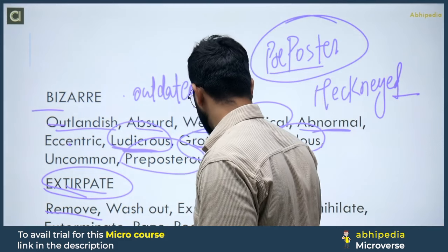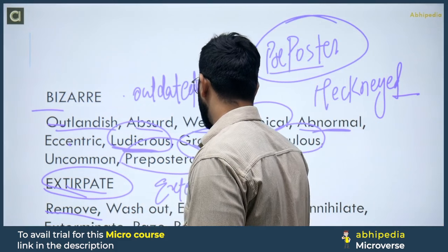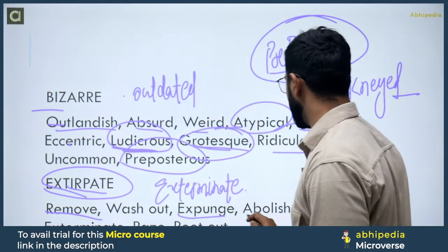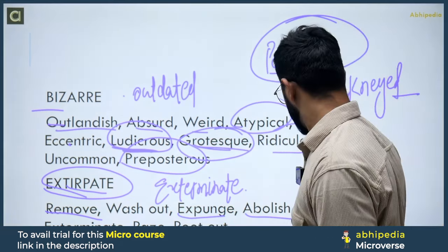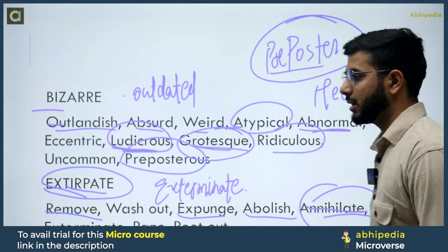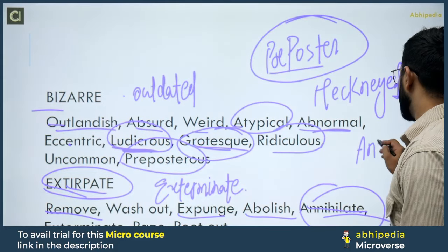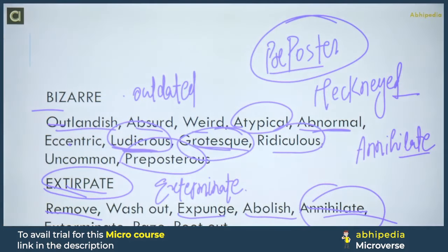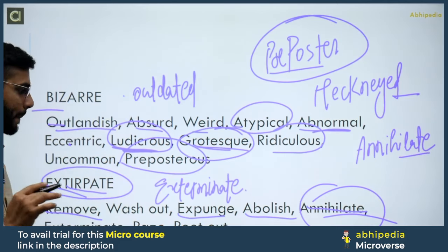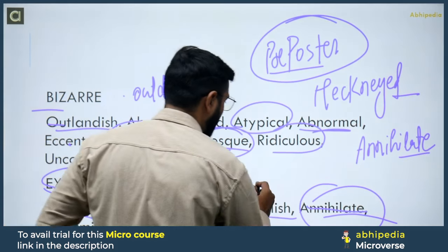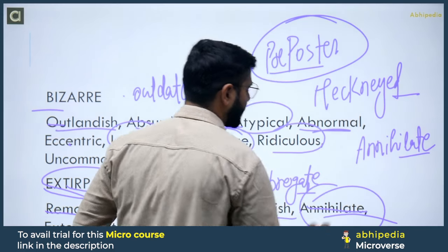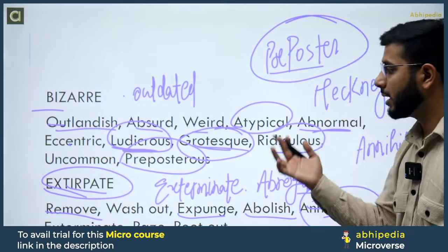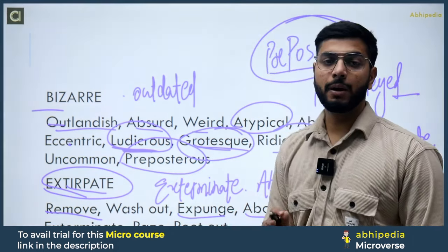Next is Extirpate. Extirpate का मतलब होता है किसी को बाहर निकालना — to remove or eliminate someone/something completely. Synonyms: exterminate, remove, wash out, expunge, abolish, annihilate, root out, wipe out, and abrogate. All these words mean to destroy or eliminate completely.